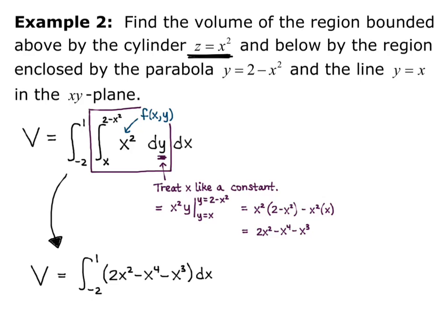So now we can just use the power rule. So we'll have 2 thirds x cubed minus x to the fifth over 5 minus x to the fourth over 4 evaluated from negative 2 to 1.